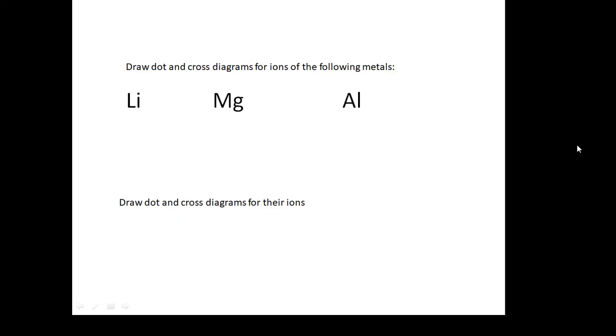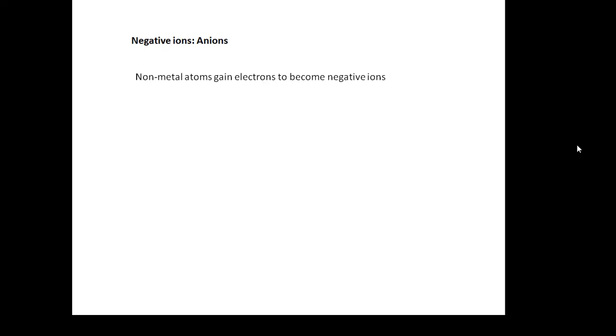Negative ions are called anions. So positive is cations, negative is anions. Non-metal atoms like chlorine gain electrons and become negative ions. You can figure out what charge they gain: it's eight minus the group number. For example, chlorine is in group seven, so eight minus seven is one. It will become Cl-.